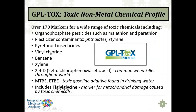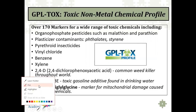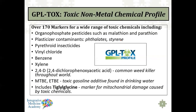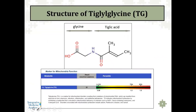The toxic non-metal chemical profile is an interesting test because it contains a lot of different chemicals that all of us can be exposed to — from organophosphate pesticides to phthalates to styrene to pyrethroid insecticides. But the last marker often tends to get overlooked: tiglylglycine, which is actually a marker for mitochondrial damage often caused by toxic chemicals.